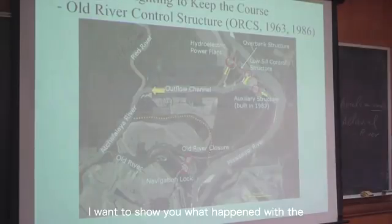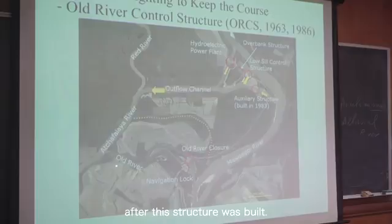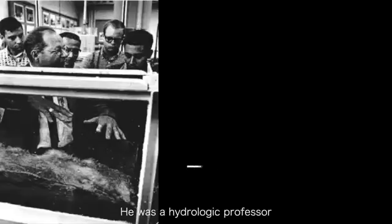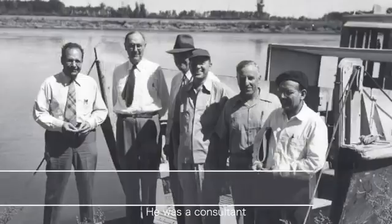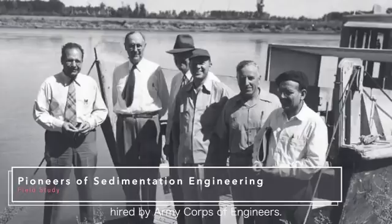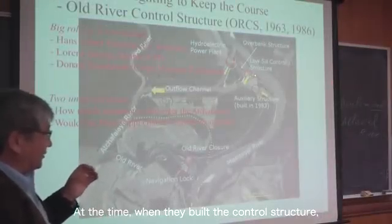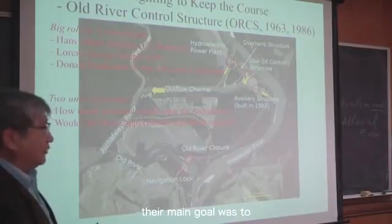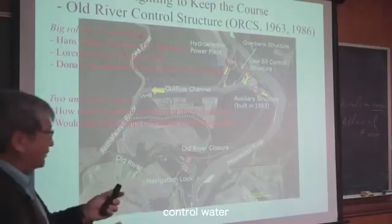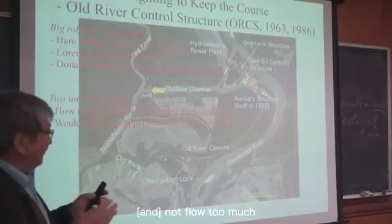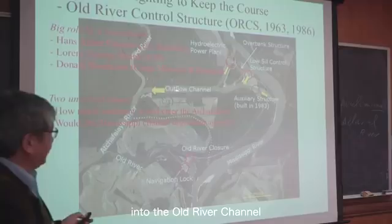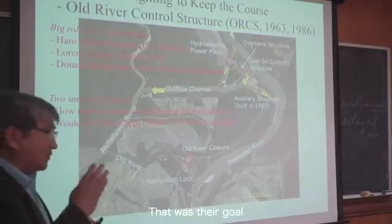I want to show you what happened with the Atchafalaya River after this structure was built. Hans Albert Einstein — the famous Einstein's younger son — was a hydraulic professor at UC Berkeley and a consultant hired by the Army Corps of Engineers. At the time they built the control structure, their main goal was to control water and not allow too much flow into the Atchafalaya.